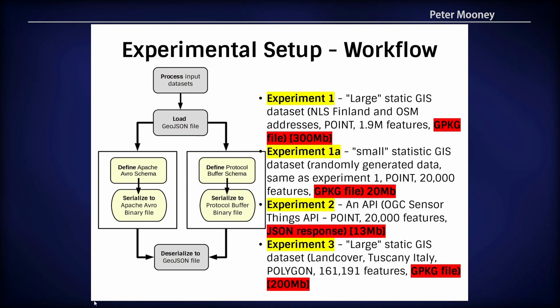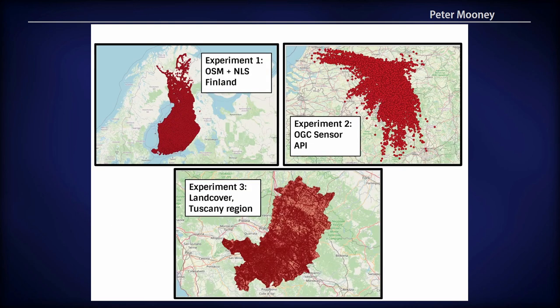Experiment three was another large static GIS dataset, but this time polygons — the land cover dataset for the Tuscany region, with just over 160,000 features. The data flow was to process the input datasets, convert them to GeoJSON, define the Avro and PBF schemas, serialize to the binary formats, and then deserialize back to verify the results. The OGC SensorThings API data is air traffic tracking data focusing around the main airports in Germany.